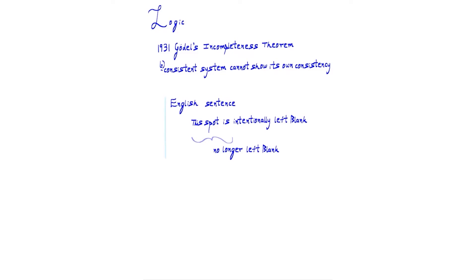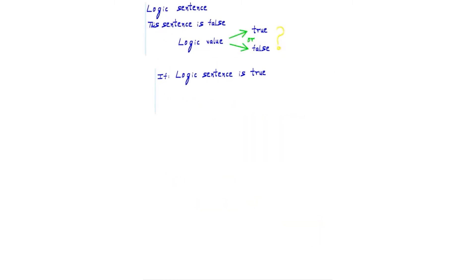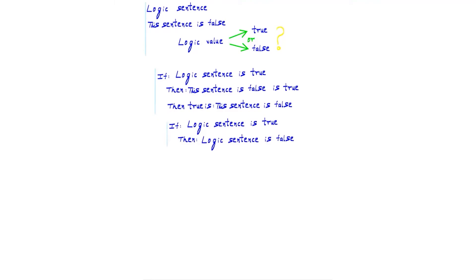This is based on a sentence such as 'this spot is intentionally left blank,' but with a logical value. The logical sentence to consider is: 'This sentence is false.' Let us explore how we are to give a logical value of either true or false. If the sentence is given true, then 'this sentence is false' is true — well then, true is that this sentence is false, so we started with false.